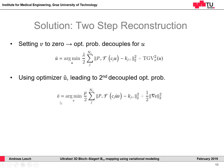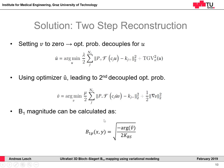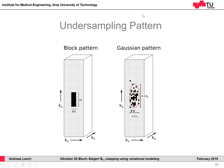Once we have obtained a solution for V, the underlying B1 field distribution can be easily calculated using a simple formula. We use two different kinds of undersampling patterns: the block pattern and the Gaussian pattern. The block pattern simply samples a block of size n times m in the k-space center of the three-dimensional k-space. The Gaussian pattern is a random variable density pattern with an underlying Gaussian density function, parameterized by the standard deviation in both phase encoding directions.